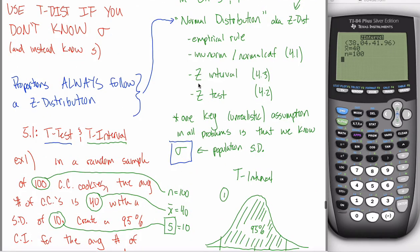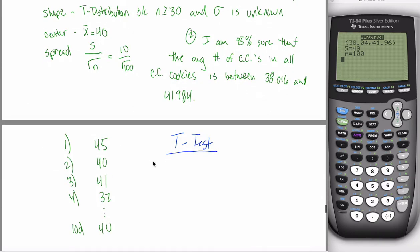So you can't do things like z-interval. You instead have to do something like t-interval like we did in the last video. Similarly, you can't do a z-test. You instead have to do a t-test, which is what we're going to do in this example.